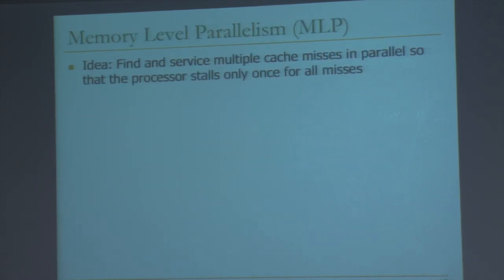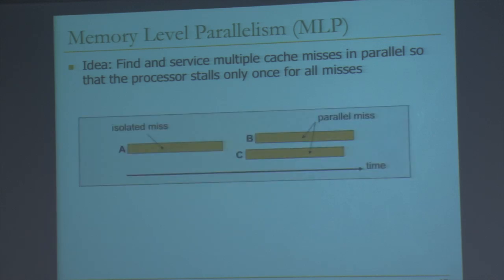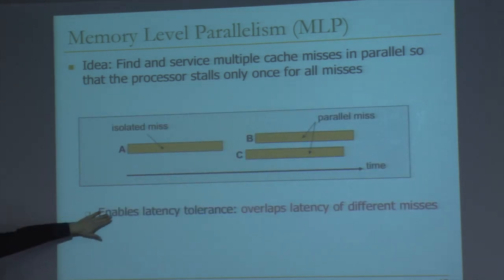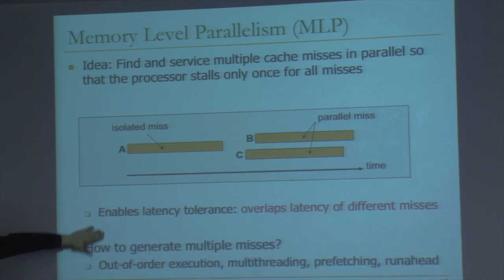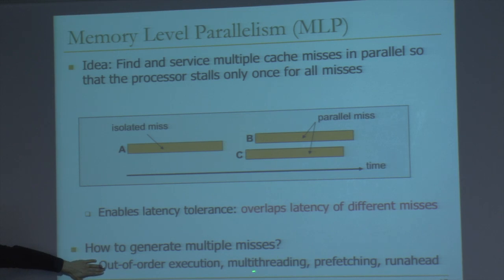The efficient scaling of instruction window size is a major research issue in out-of-order execution today. One idea we've already seen is memory level parallelism: find and service multiple cache misses in parallel so the processor stalls only once for all misses. This enables latency tolerance by overlapping the latency of different misses. We've seen several techniques to generate multiple misses: out-of-order execution, multi-threading, and prefetching. Now we'll see run-ahead execution.